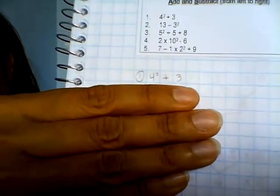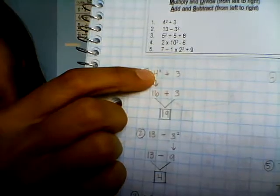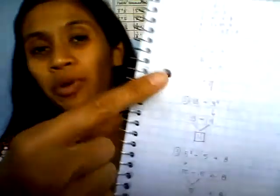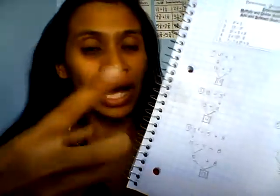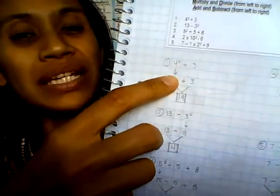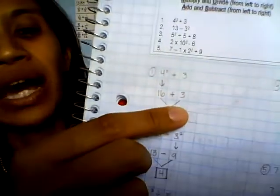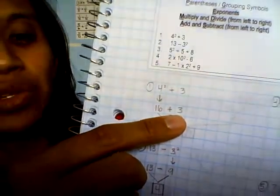We're going to do the exponent right there. 4² - now that's not 4 × 2, it's 4 × 4. You have to multiply that number 4 by itself two times. That's what that power means. So 4² is 16. Bring down that + 3, and 16 + 3 is 19. Easy enough.